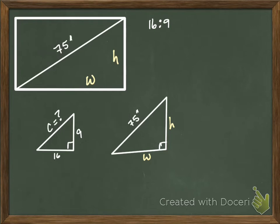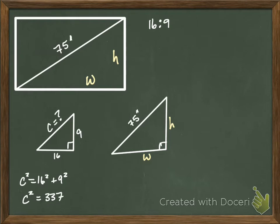The first thing I need is I need to find my C value. So this is 16 squared plus 9 squared. C squared equals 256 plus 81, so that's 337. And my C value was 18.36.